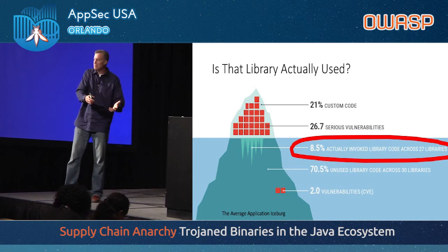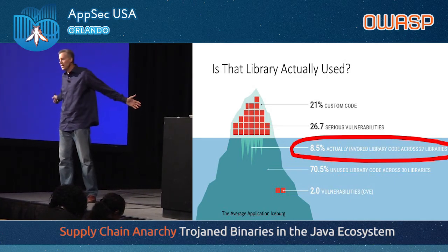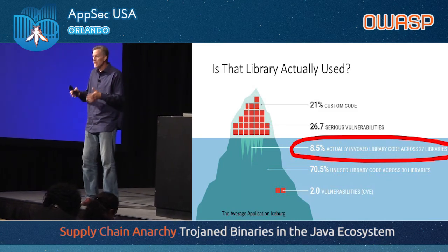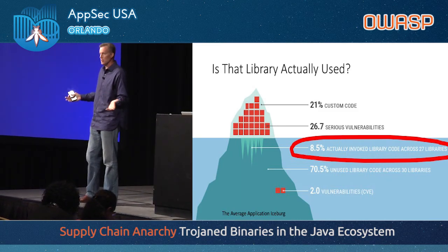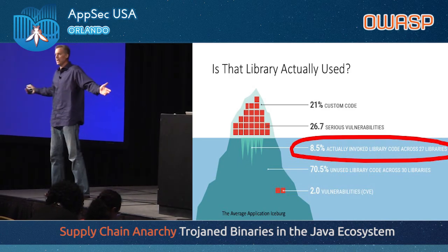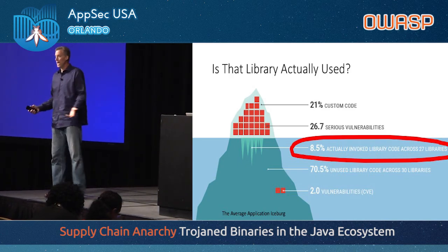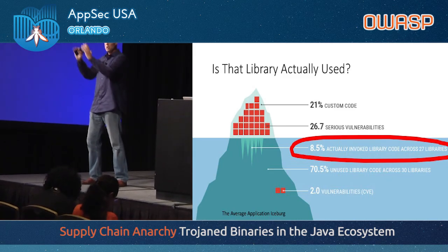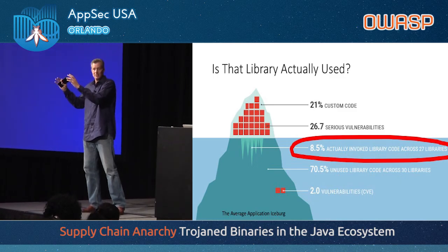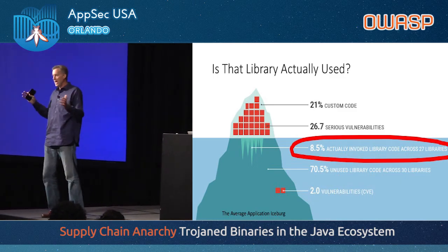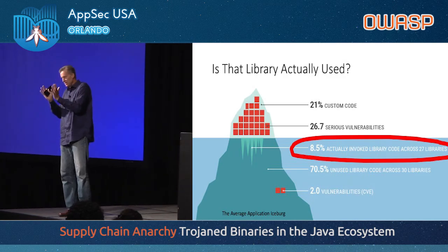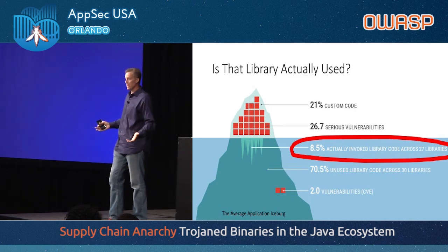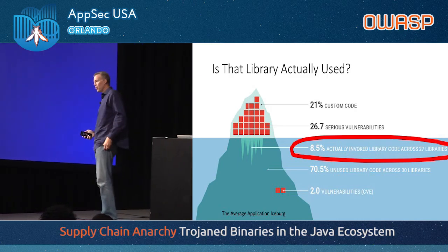They're all compile-time dependencies and other kinds of code that gets bundled into your application and deployed and never gets called. We know this because we measure applications as they're running. Across 10,000 applications we've got a ton of data. Your application is mostly custom code — three-quarters custom code — and only 8.5% is libraries that are actually invoked. We call those active libraries.